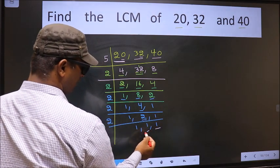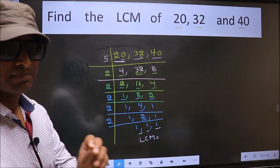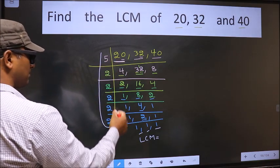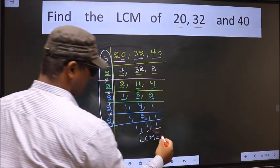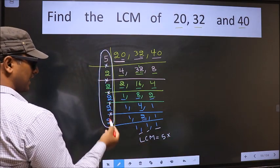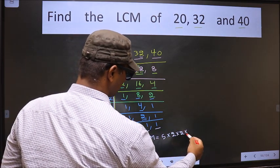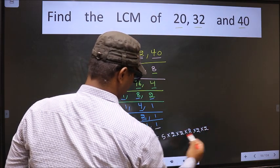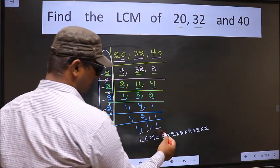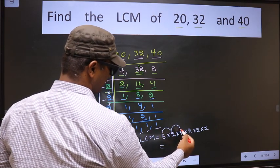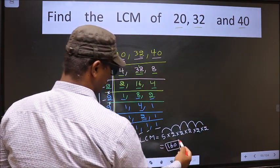We got 1 in all 3 places, so our LCM is the product of these numbers. That is 5 times 2 — how many times did we get 2? 1, 2, 3, 4, 5 — so into 2, into 2, into 2, into 2, into 2. Now let us multiply: 5 times 2 is 10, times 2 is 20, times 2 is 40, times 2 is 80, times 2 is 160. So 160 is our LCM.